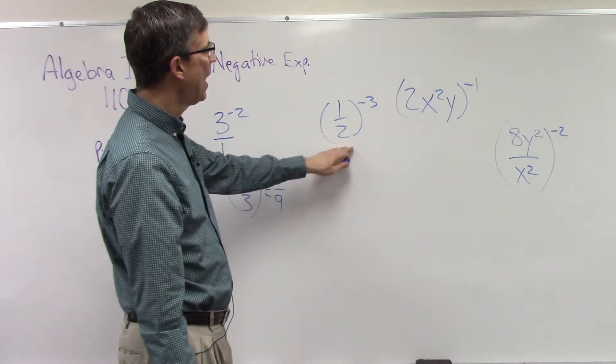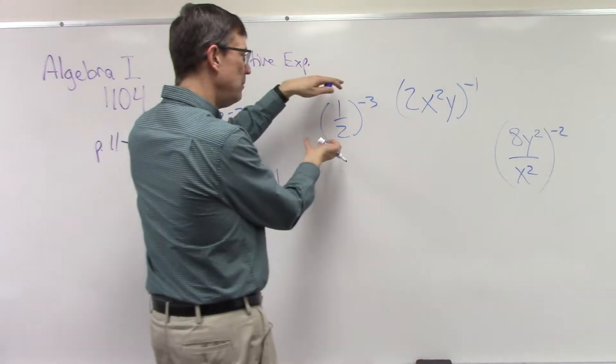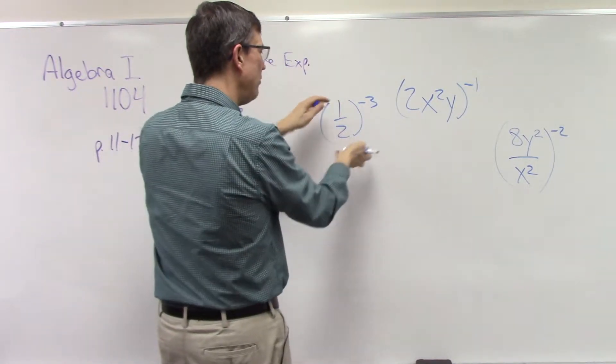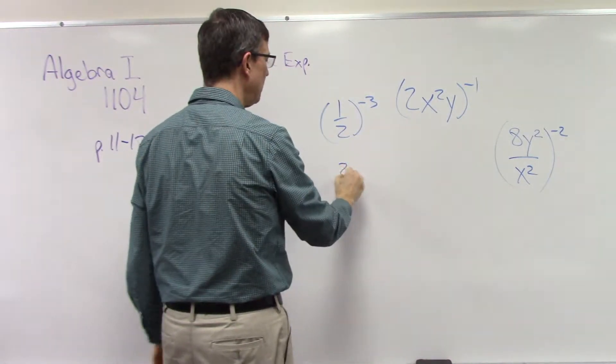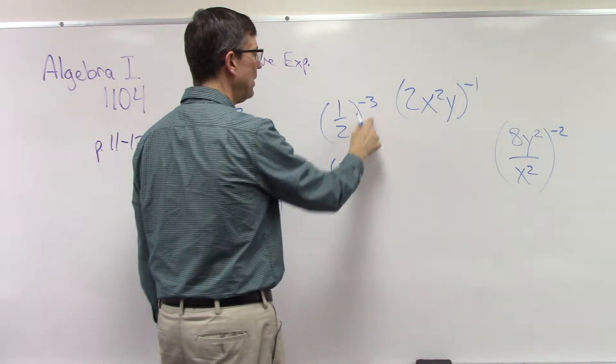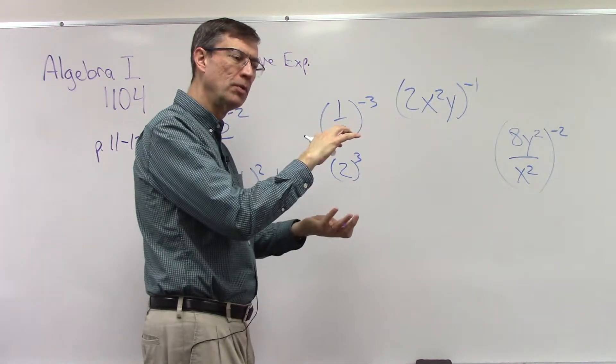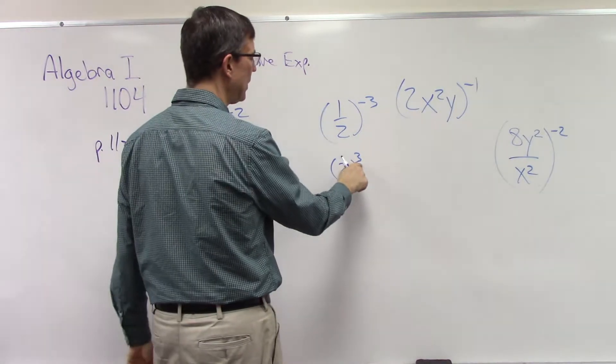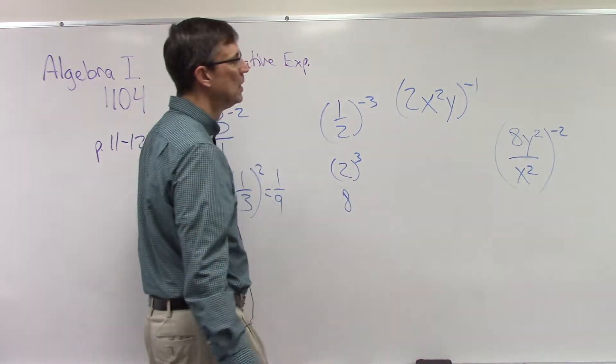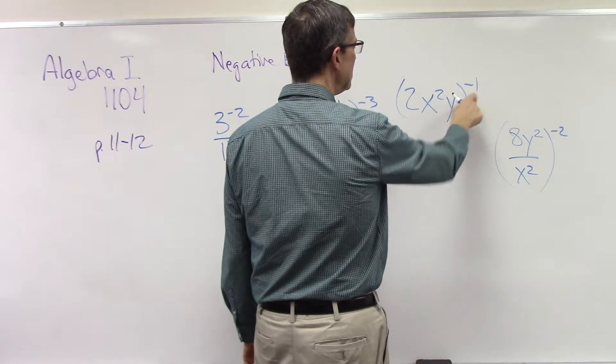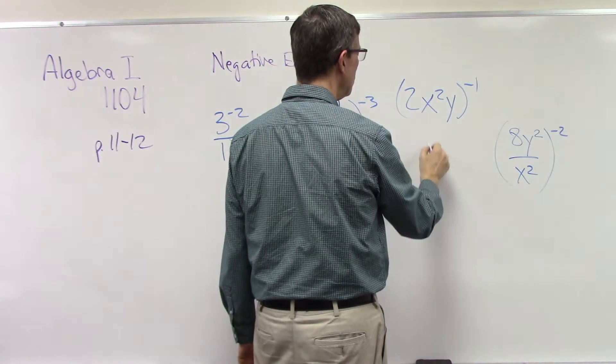1/2 to the negative third means you get rid of the negative, flip the half upside down and it becomes 2. Now I have a positive exponent, so as soon as you do the reciprocal, the exponent becomes positive. Now I can apply that and get 8.